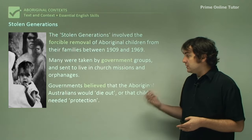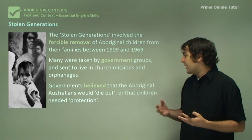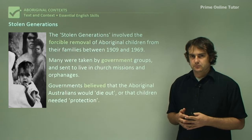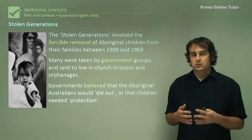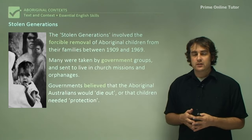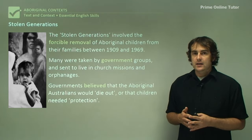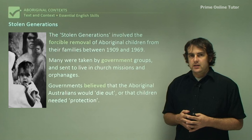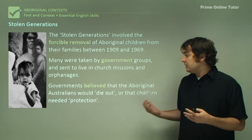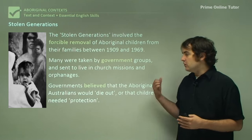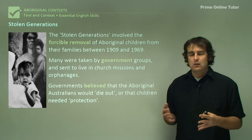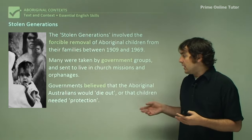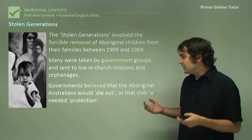Governments believed, particularly when they introduced this policy, that Aboriginal Australians would die out or that children needed protection. It was a very controversial argument when it was first brought in, and for some reason it stuck around until the 1960s. It had to do with this belief that Europeans were superior in some way to Aboriginal citizens, which wasn't true. It was something that Europeans often spread, and particularly white Australians felt like they had to do, when really they didn't.